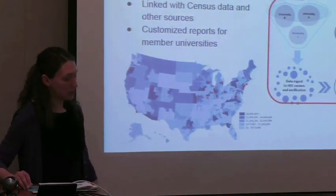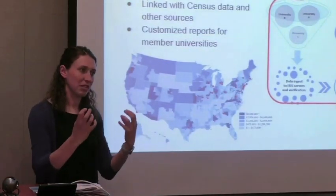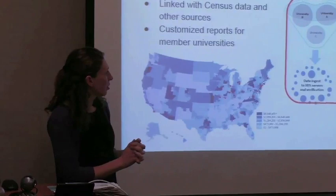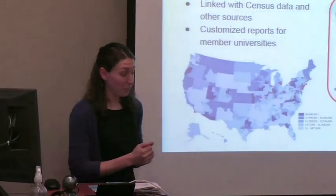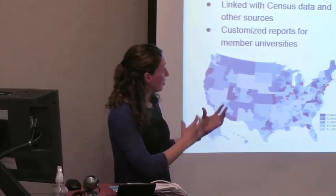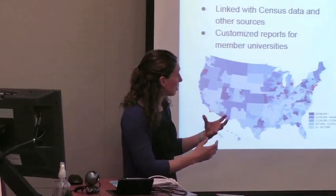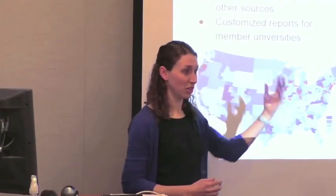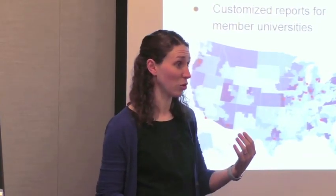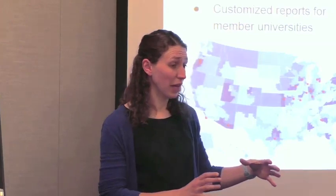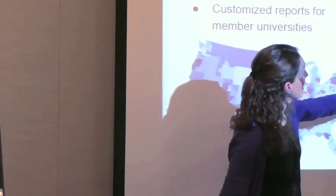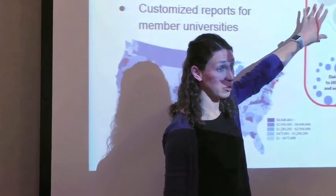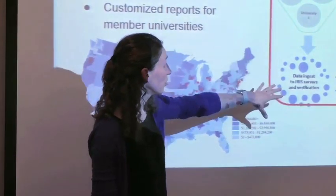When we talk about the IRIS U-Metrics dataset, there are basically two different datasets. I want to start with what we call the production dataset, because most of what I'll discuss is the research dataset. When we talk about ingesting data from our member universities, the production dataset is the living, breathing, constantly changing dataset — we're continually getting more members and they're continually sending us more data. We have a whole team at IRIS devoted to working closely with data contacts at member universities to actually ingest data into IRIS servers.